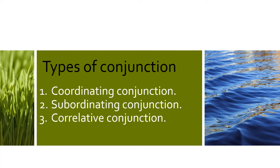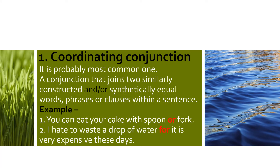Now we are going to learn the types of conjunction. There are three types of conjunction: first, coordinating conjunction; second, subordinating conjunction; third, correlative conjunction. Let's learn the first one — coordinating conjunction. It is probably the most common one.